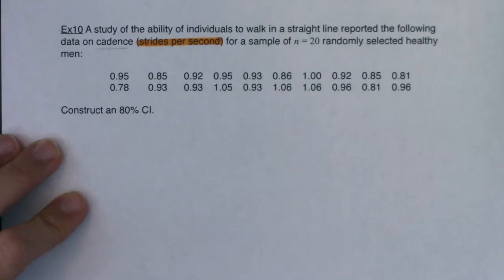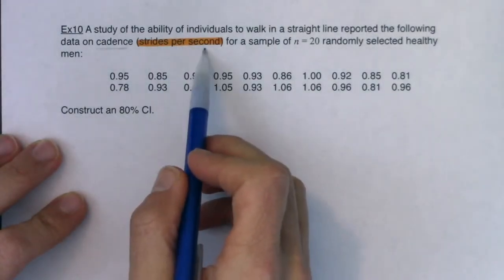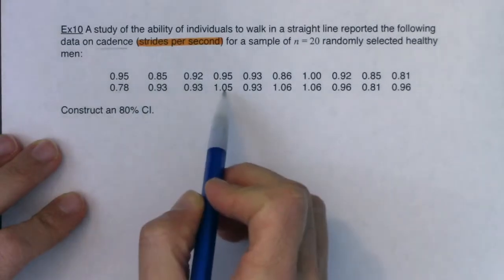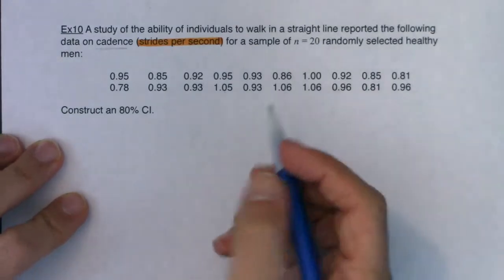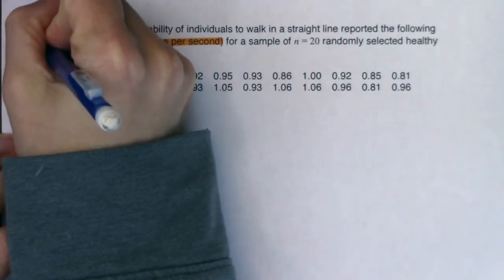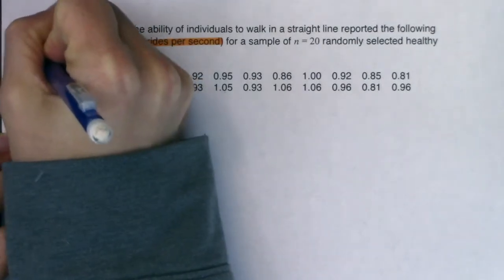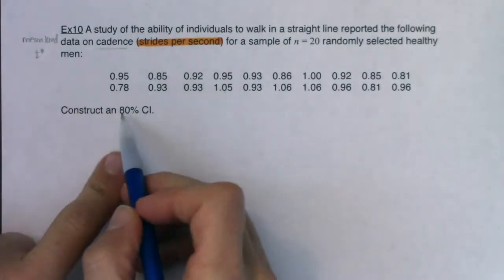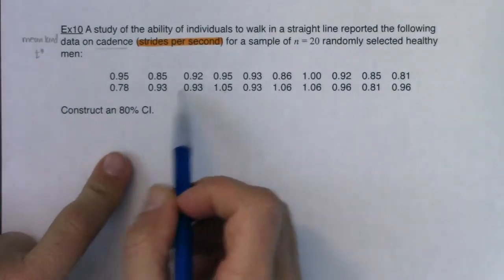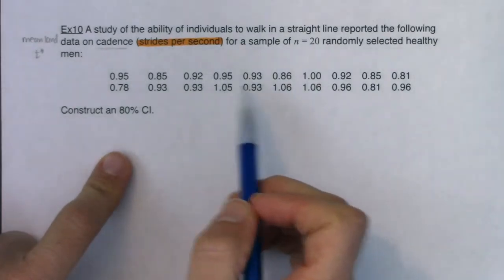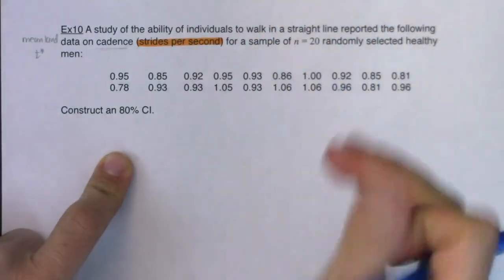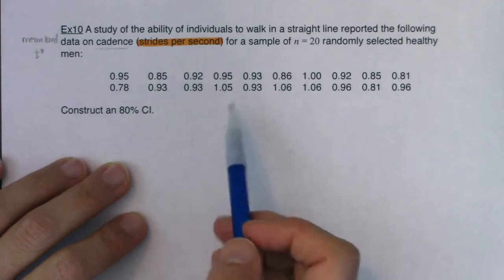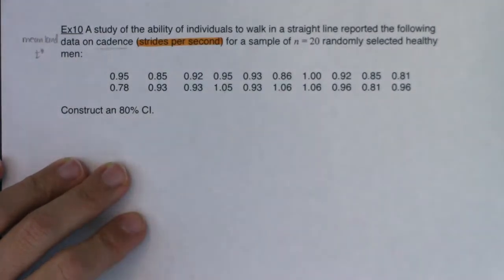Cadence is how fast you're walking — how many strides per second. Some of the healthy men are taking almost one stride per second, some a little faster. Ultimately, I'm in mean land, so I know I'm going to use a t-star critical value. This is an 80% confidence interval, and based on these 20 men I want to estimate the true mean — what the mean would be if I had run a census.